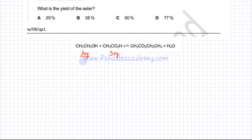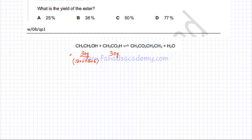For ethanol, there are 2 carbons: 12 × 2 = 24. There is 1 oxygen: 16. Plus 6 hydrogens: 6. So the molar mass of ethanol is 46. Therefore moles of ethanol = 30 ÷ 46 = 0.652 moles, rounded to 3 significant figures.